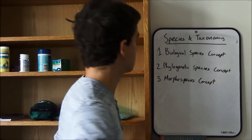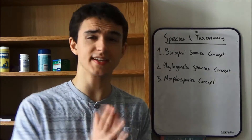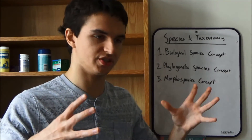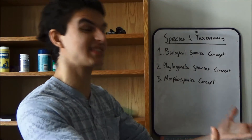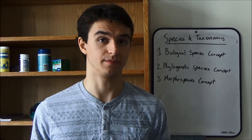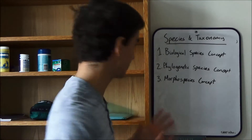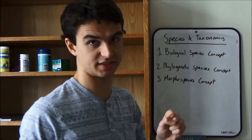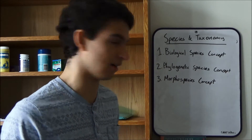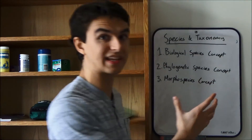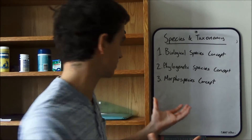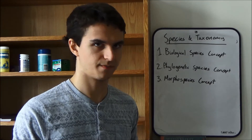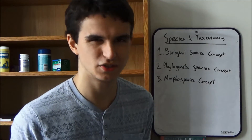The last species concept is a little bit more straightforward: the morphospecies concept. This is basically looking at morphological features that we can physically see in an organism. It's particularly useful for palaeontologists, where the biological species concept and the phylogenetic species concept don't apply. We can only classify extinct organisms, sometimes, by just looking at their morphological features. But of course, it also has its downsides.